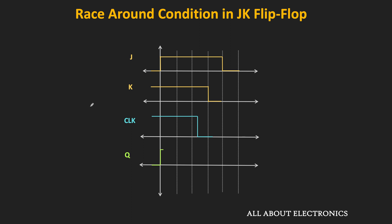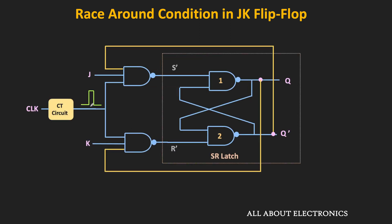Using the pulse transition circuit, we can generate narrow pulses at every clock transition, and in this way we can use the gated latch as an edge-triggered flip flop. But we need to ensure that the pulse duration is greater than the propagation delay of the logic gates. If the pulse duration is much larger than the propagation delay of the flip flop, we may once again encounter the race-around condition.